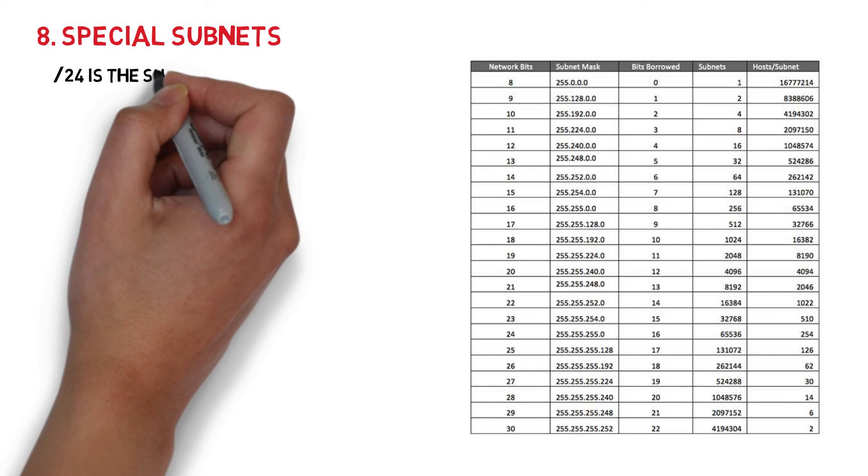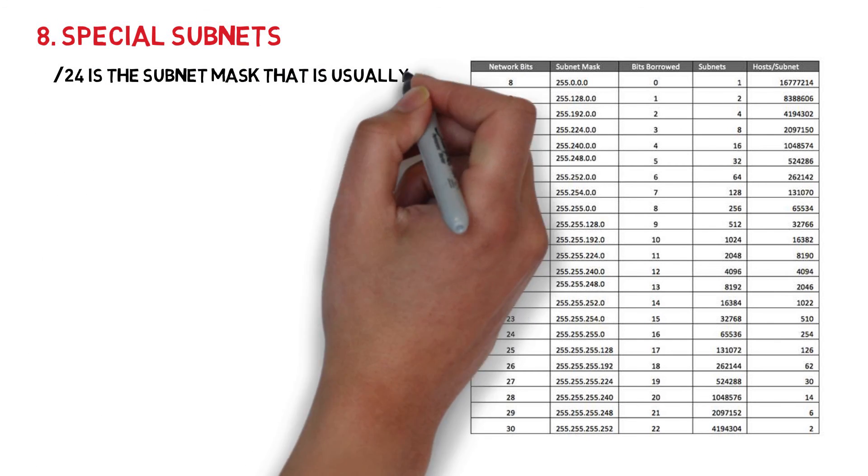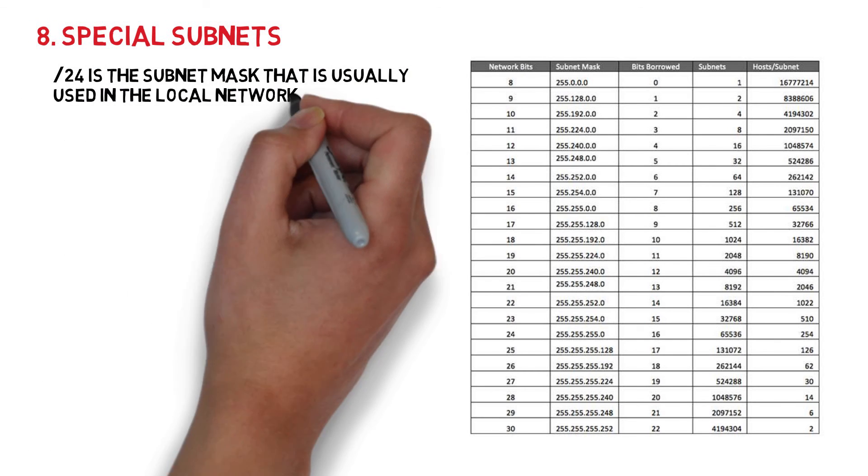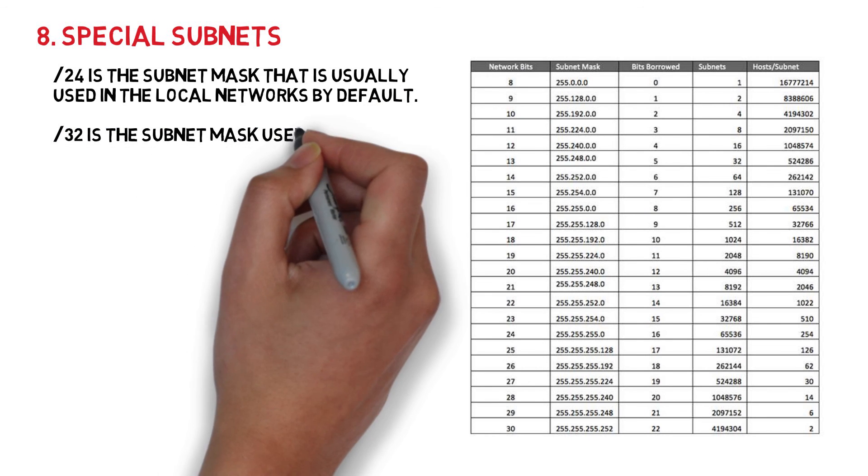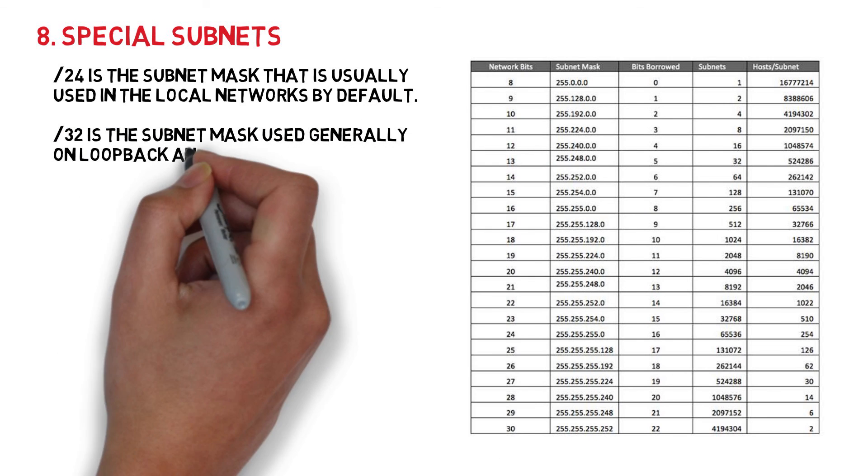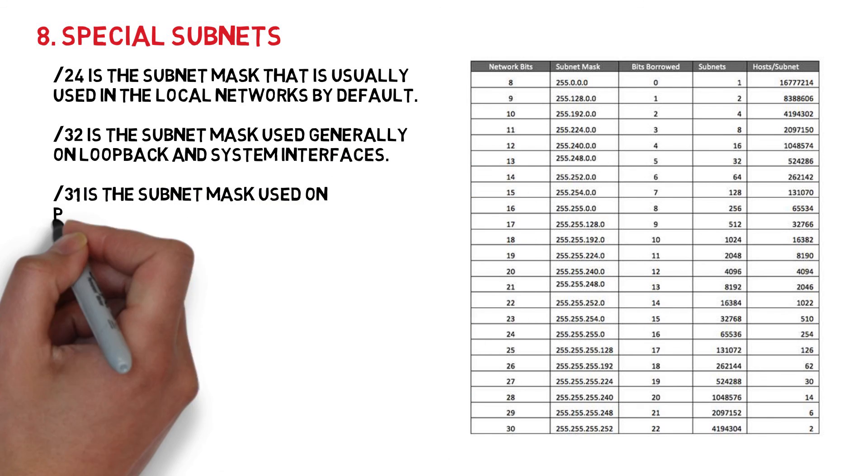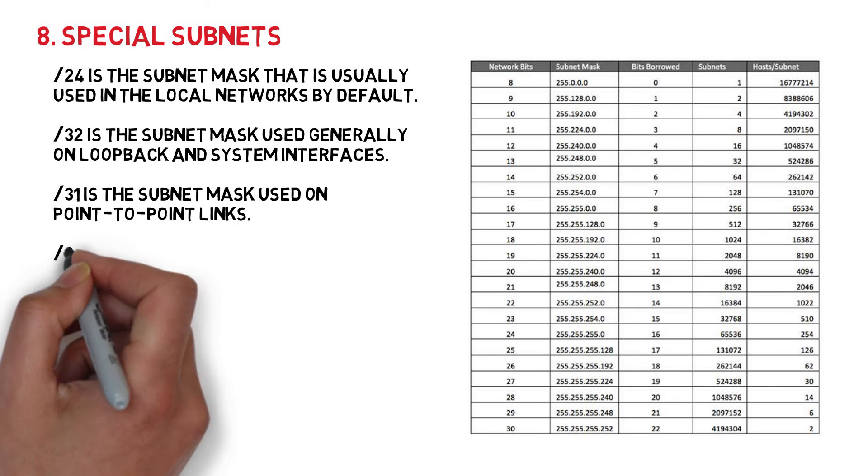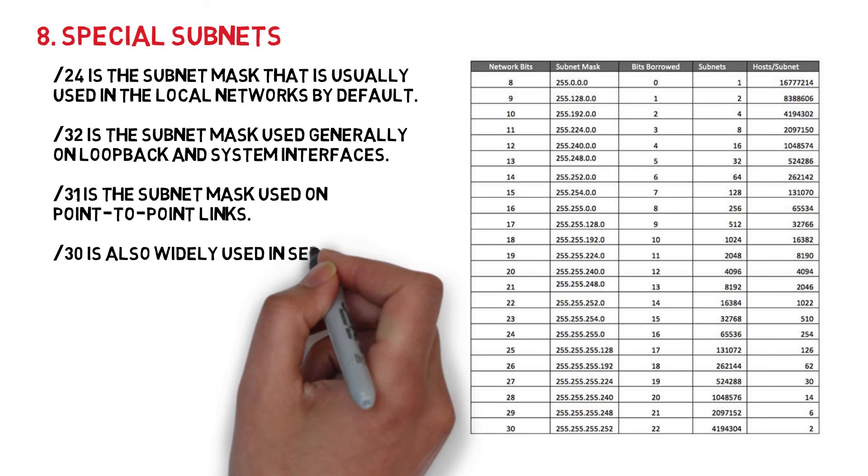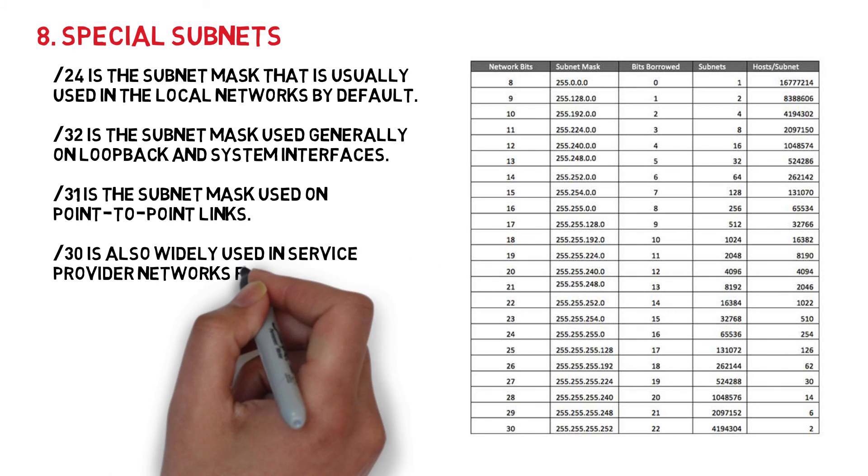Special subnets. Slash 24 is the subnet mask that is usually used in local networks by default. Slash 32 is the subnet mask used generally on loopback and system interfaces. Slash 31 is the subnet mask used on point-to-point links. Slash 30 is also widely used in service provider networks for point-to-point connections.